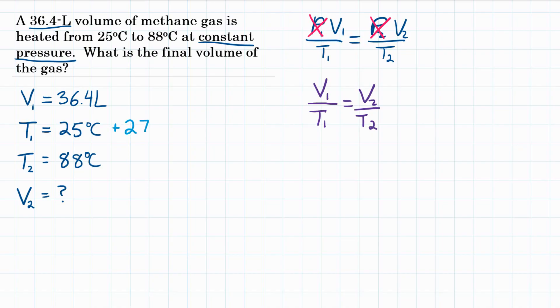To do that, you add 273. So 25 plus 273 would be 298, and that is Kelvin. We'll do the same thing for T2. 88 plus 273 is 361.